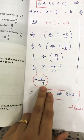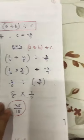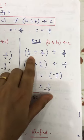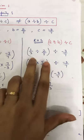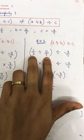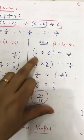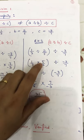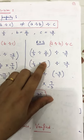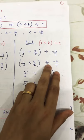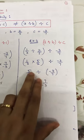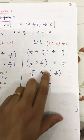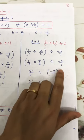Coming to the right hand side, put the values: a is this, b is this, and c is this. I have to solve this bracket first: 1 by 3 — remove the divide sign, put the multiply sign, and the next value will be 5 upon 2. Next is divided by minus 3 by 7. Solving the bracket gives 5 by 6.